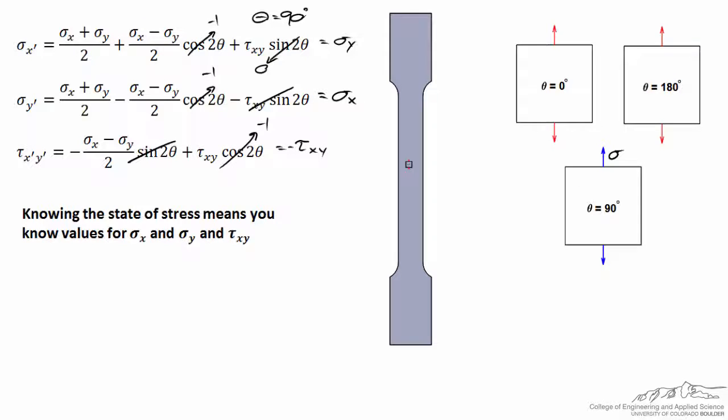Indeed this is the case when I look at sigma_x', that's equal to sigma_y, the original stress in the vertical direction. So these arrows changed from red to blue.